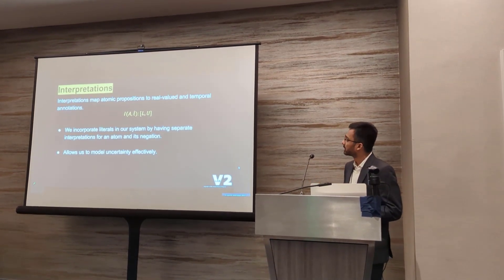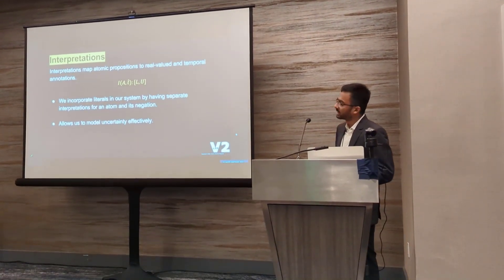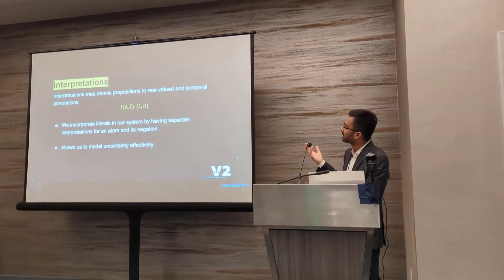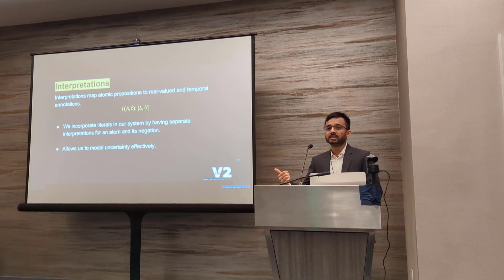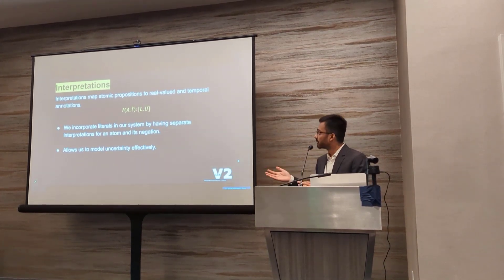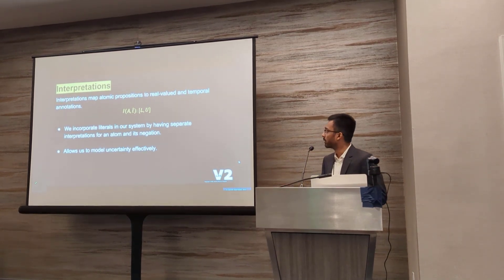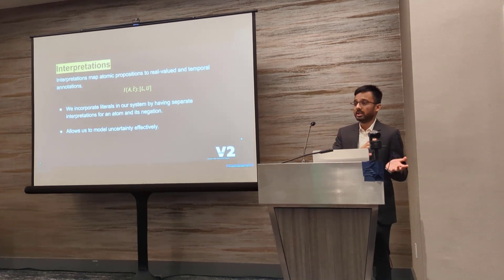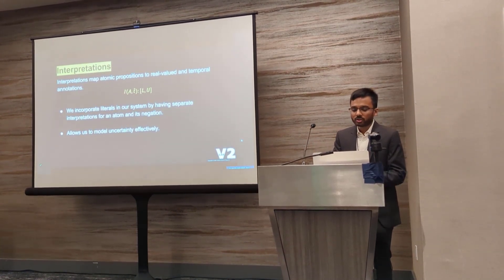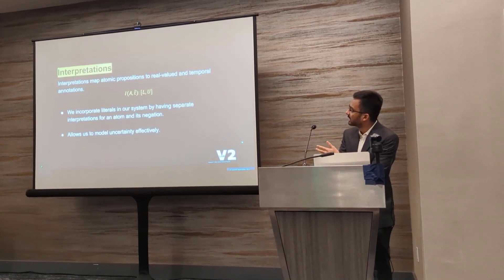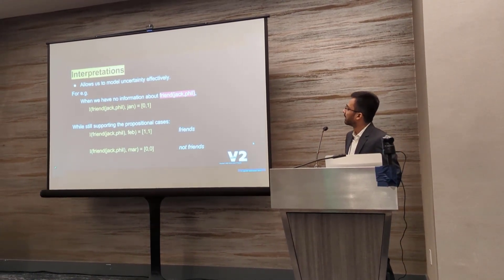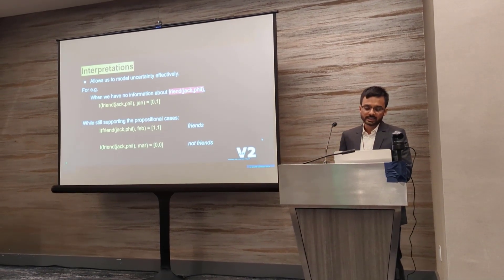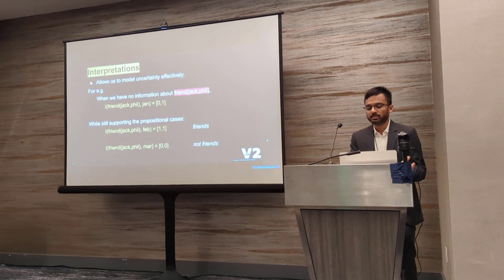We also have something for interpretations. Interpretations map atomic propositions to real-valued and temporal annotations, where A could be atoms and T-hat could be time points or time ranges over which the annotation is defined — or it can be specified as valid over the entire time range, which are basically facts. We incorporate literals by having different annotations and specifying constraints so that an atom and its negation cannot both be true simultaneously. We also model uncertainty, and as an example, the binary predicate friendship between Jack and Phil over three months would be zero-one in the uncertain case, but we also support the propositional case for true and false.